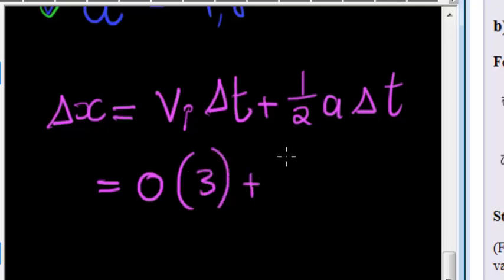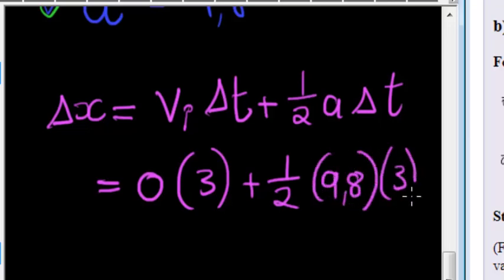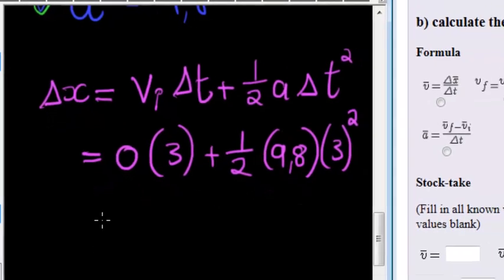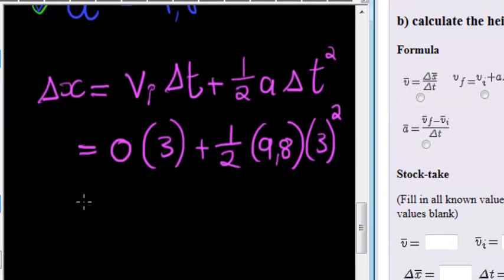9.8 meters per second and 3 - sorry there's a square that I almost always forget, I hope you don't. So in solving this, this part will be zero.